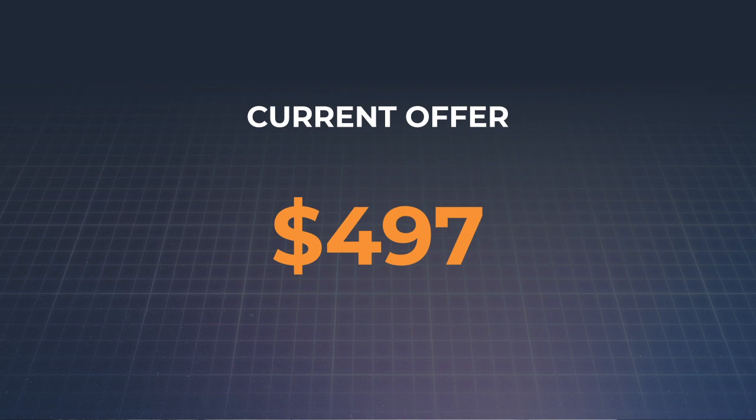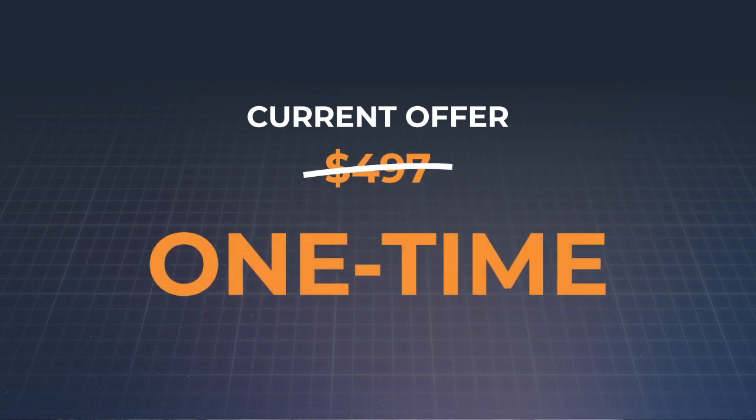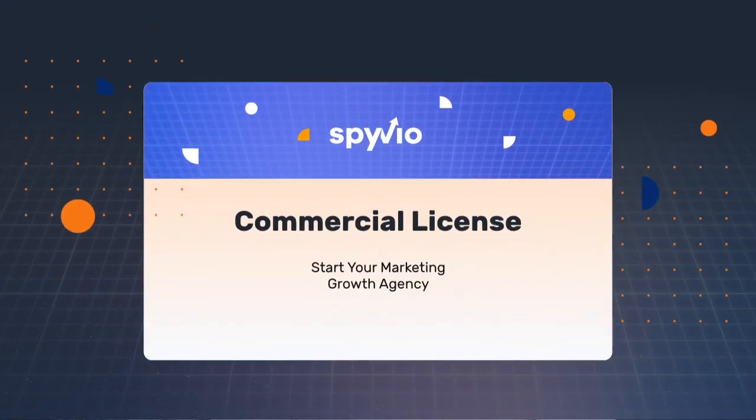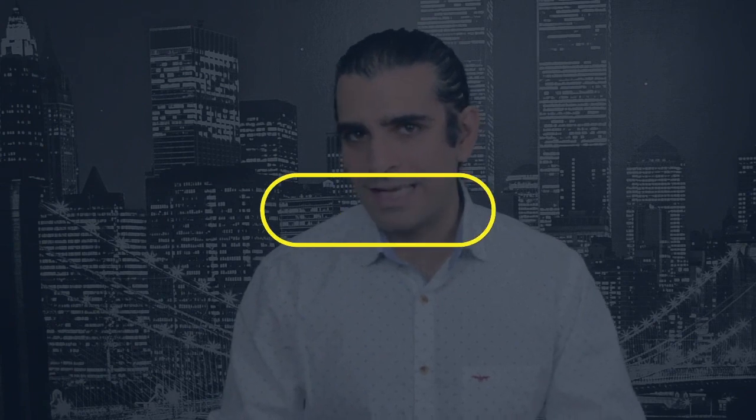The offer you see on this page is available at a one-time price and we unlock all the features within SpyView for you forever. But we won't be keeping this offer up for long, so make sure you get this today and unlock the bonus commercial license to use for your clients as well. If you come back tomorrow the one-time price offer may not be available and the commercial license will definitely be gone. Click the button below and get this five-year charter license today.